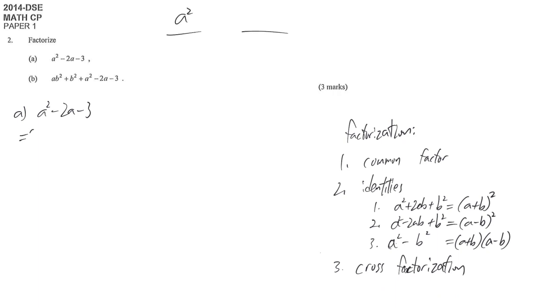It is a process to guess (a + something) times (a + something). So we think about what times what will give us negative 3. We may think 3 times negative 1. So it fulfills the first requirement.